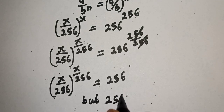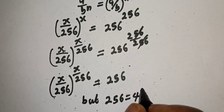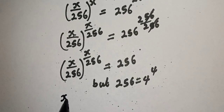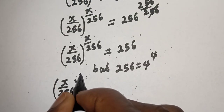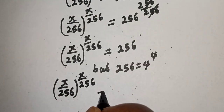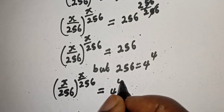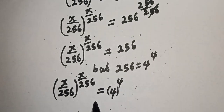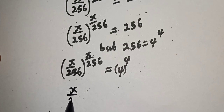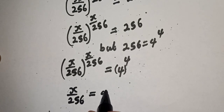But 256 is equal to 4 raised to the power 4. So s over 256 raised to the power of s over 256 is equal to 4 raised to the power 4. Now if you compare this, the base is equal to 4 and the exponent is equal to 4. Therefore s over 256 is equal to 4.